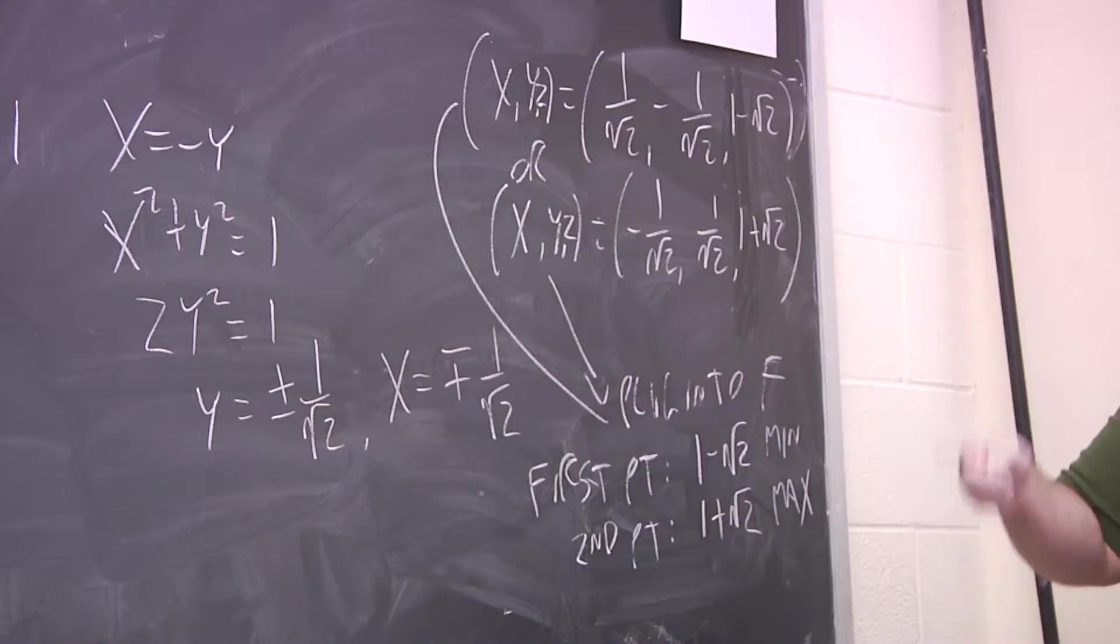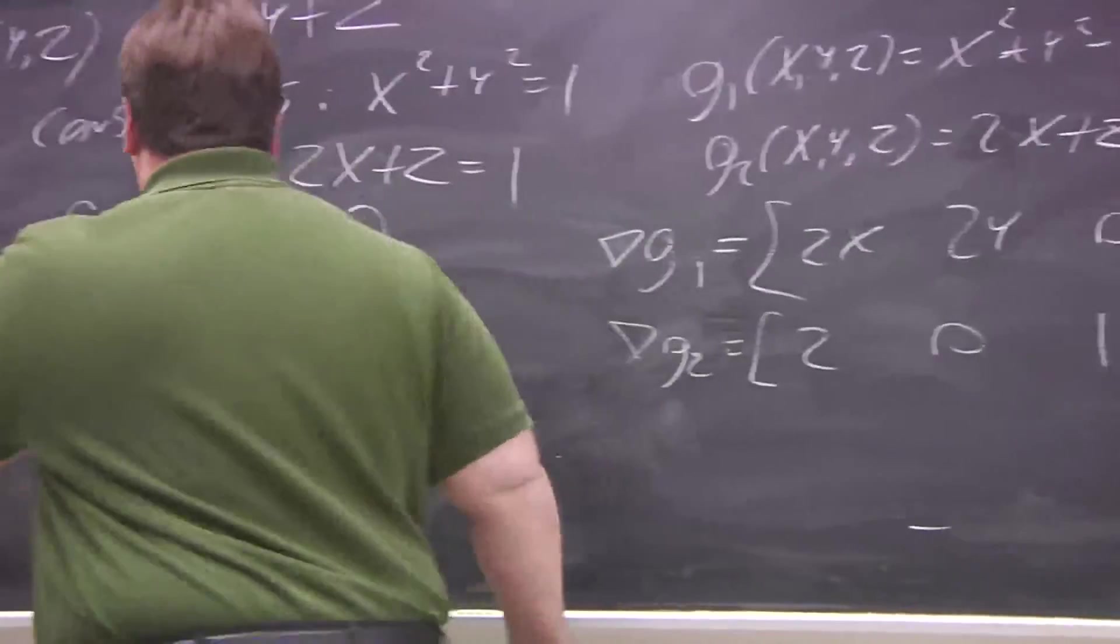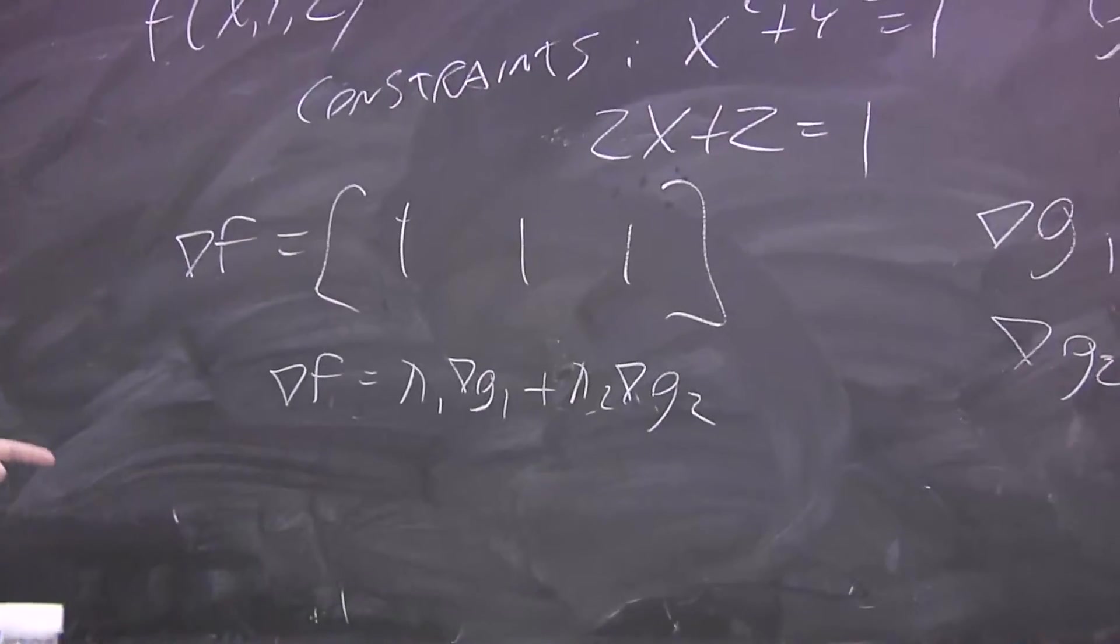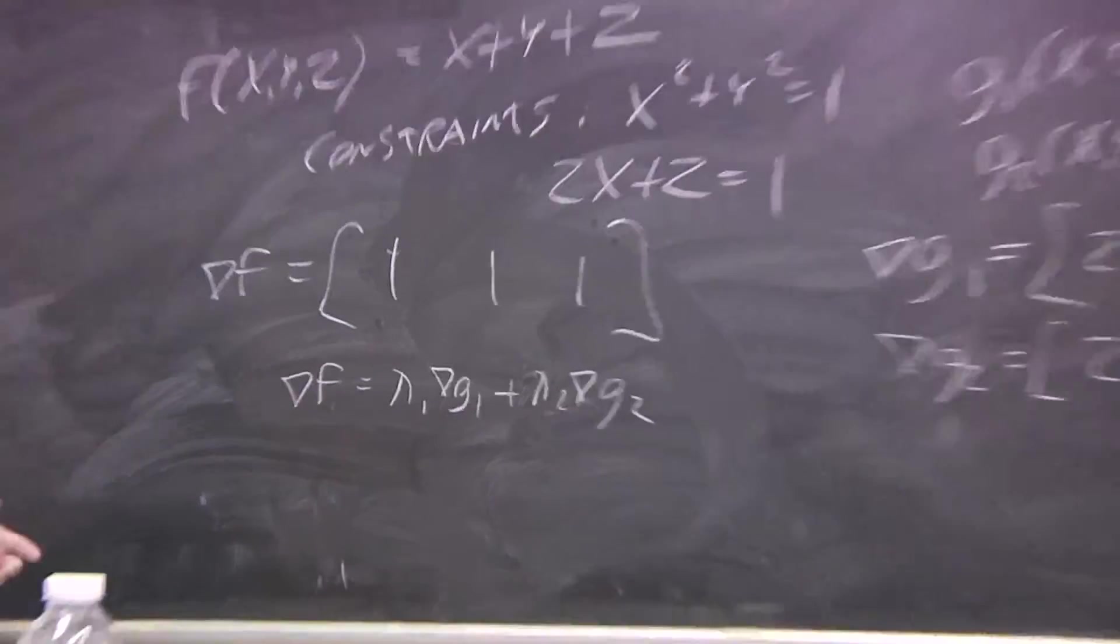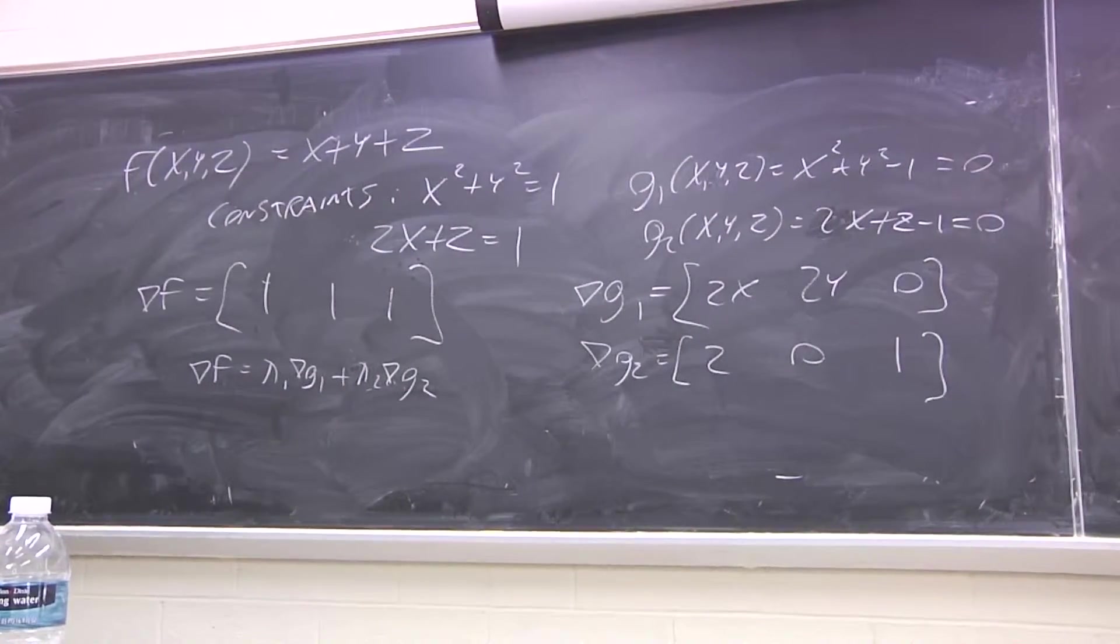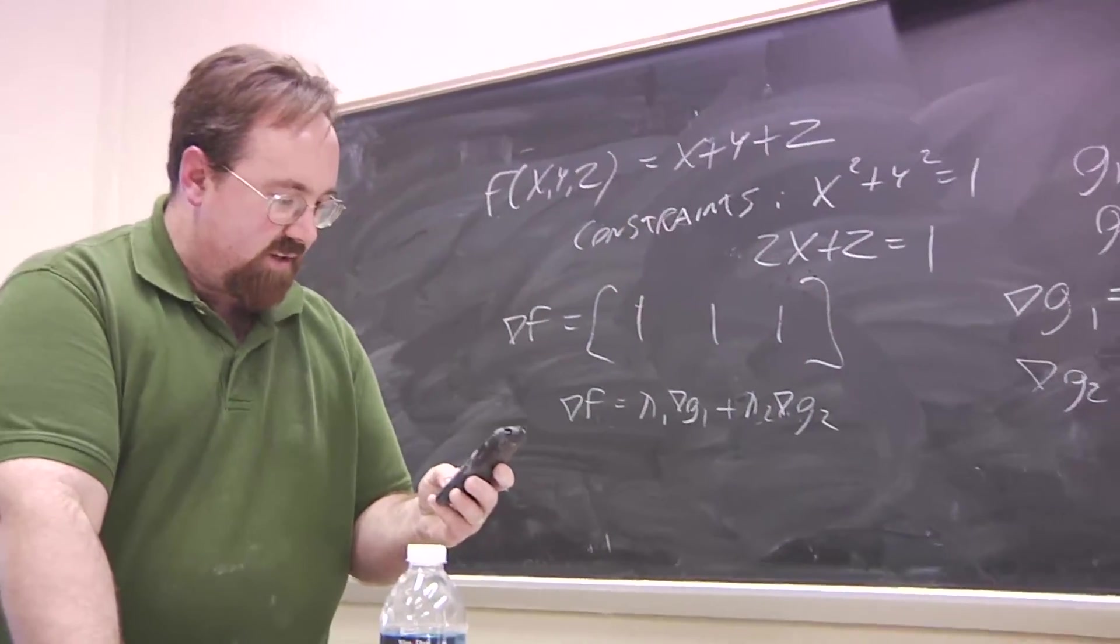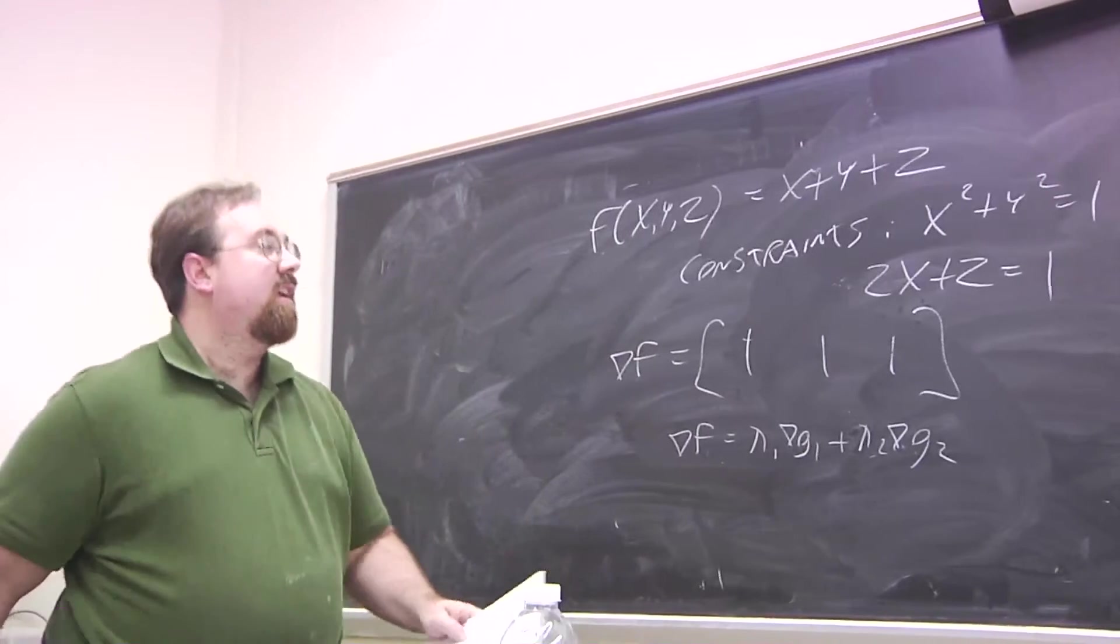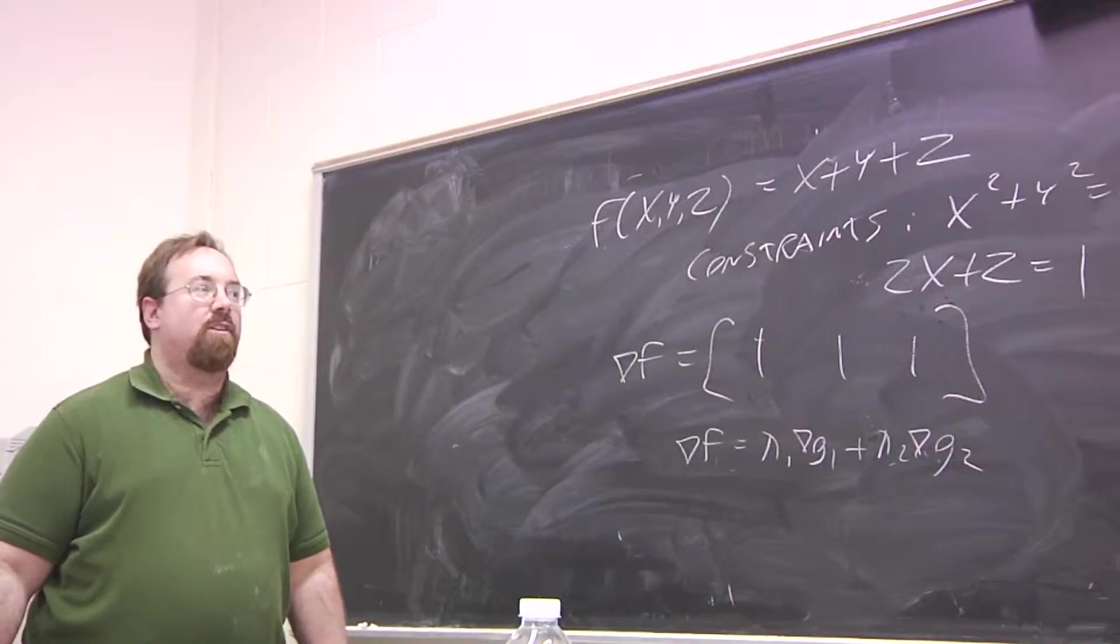Come up with candidates, as many as you can find, that satisfy this relationship, and then plug them into the function. Largest value is a constrained max, the smallest is the constrained min. Questions about this, thankfully unflawed example?